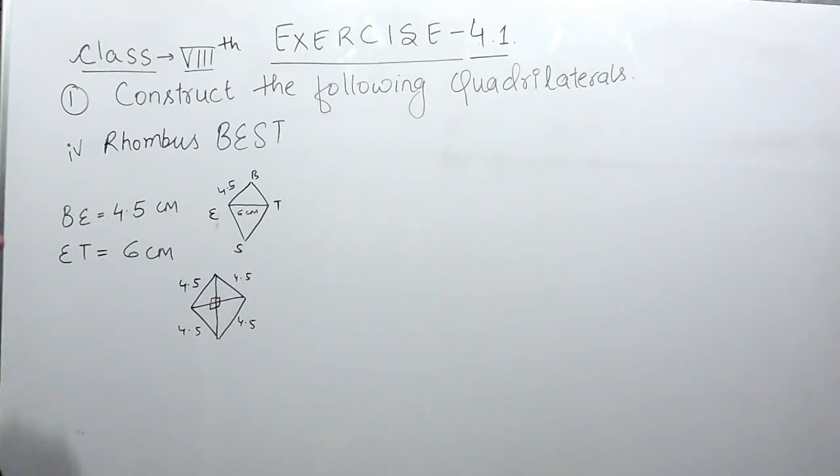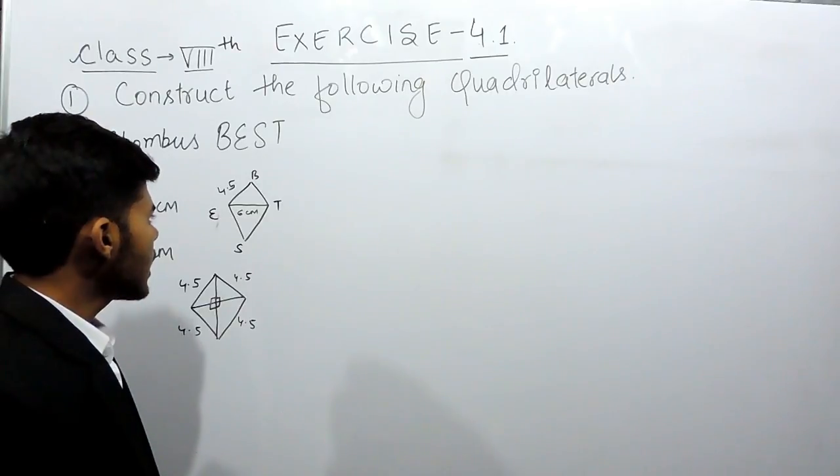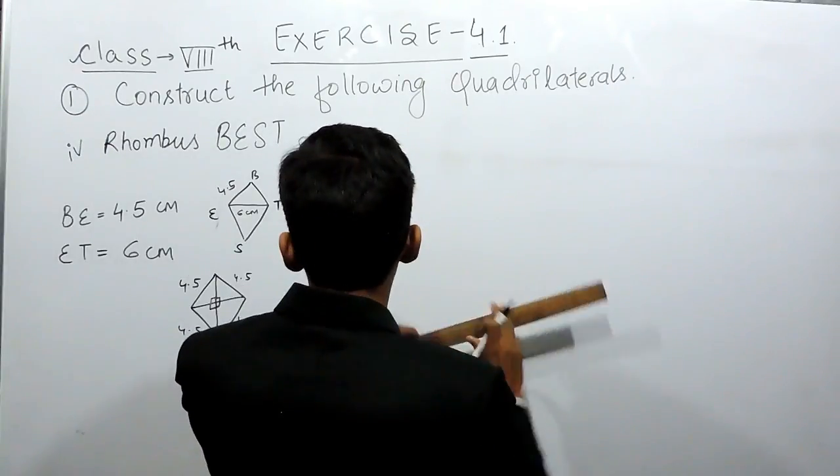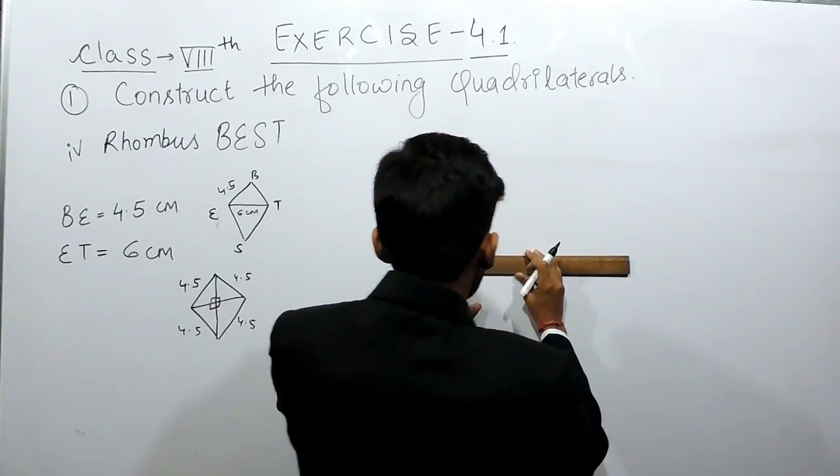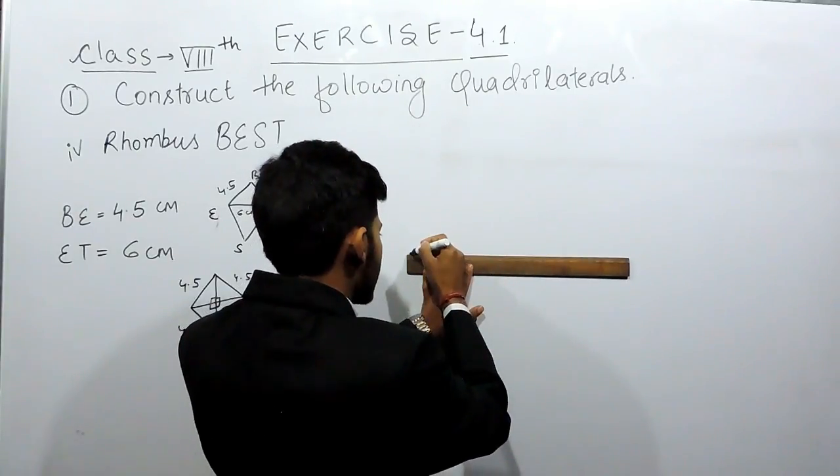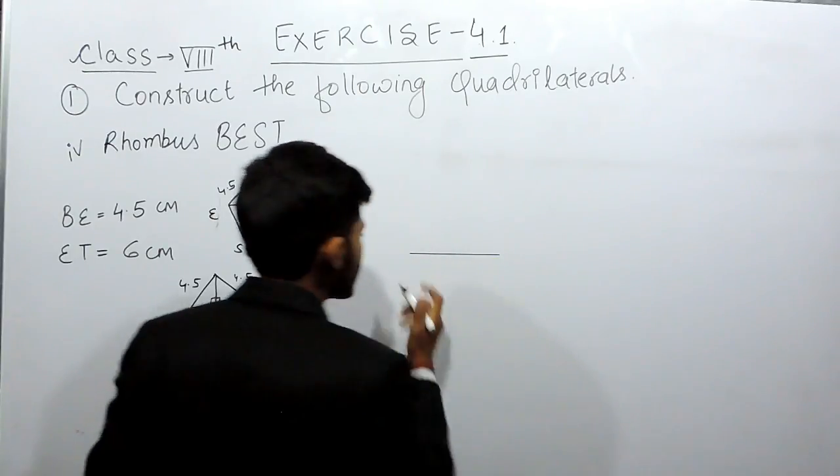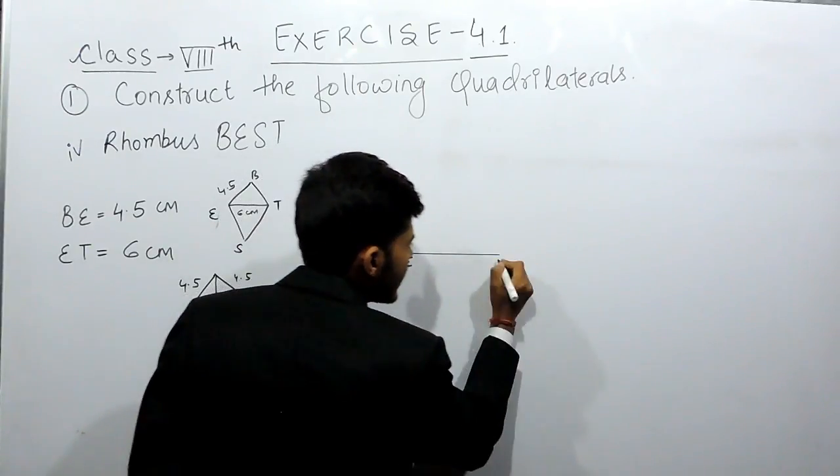So how to construct this? First of all you need again a ruler, a compass and a pencil. First of all with the help of this ruler you will construct a line segment of 6 cm. Supposingly like this. This is your line segment of 6 cm and this is ET.